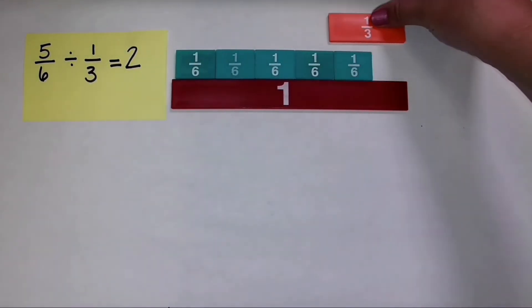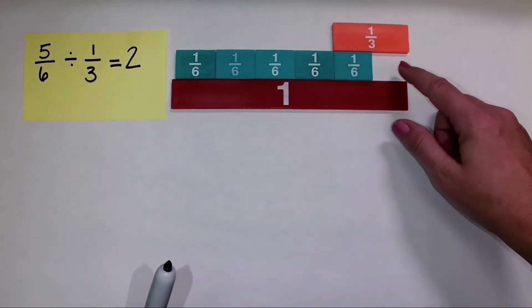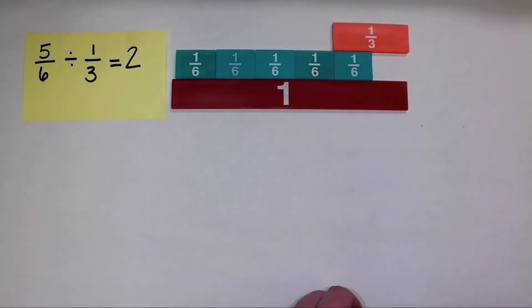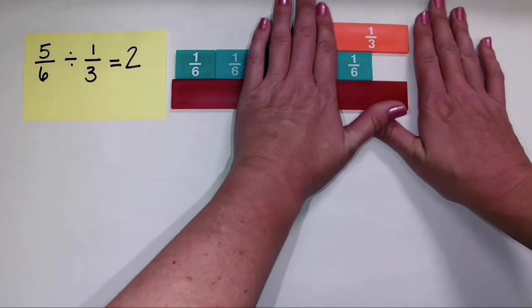Now let's look at this next group. Can I make a full group of one-third? No. But how much of a group of one-third can I make? Now this is where it's really tricky.